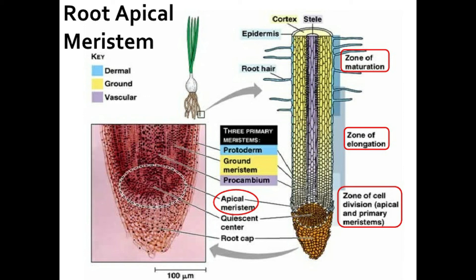Lateral meristems are cylinders of dividing cells. These are present in dicots and gymnosperms. Vascular cambium and cork cambium are examples of lateral meristems. They play an important role in the increase in diameter of the stem and root, and in secondary growth.